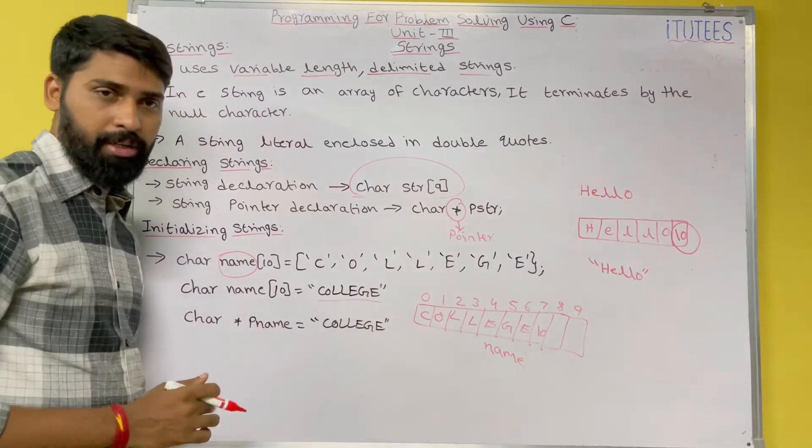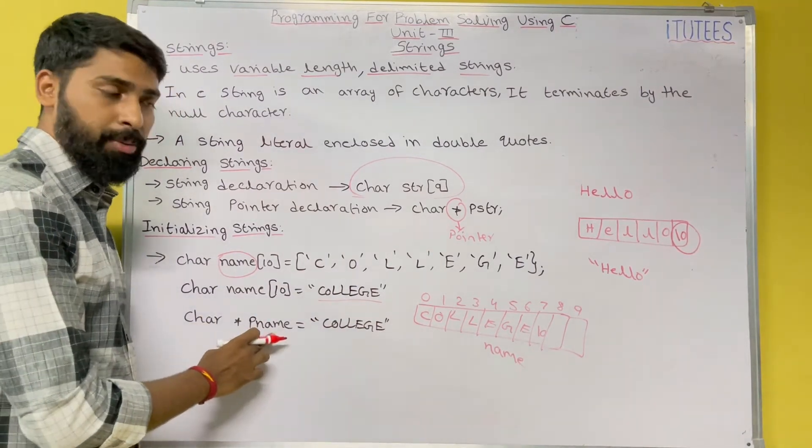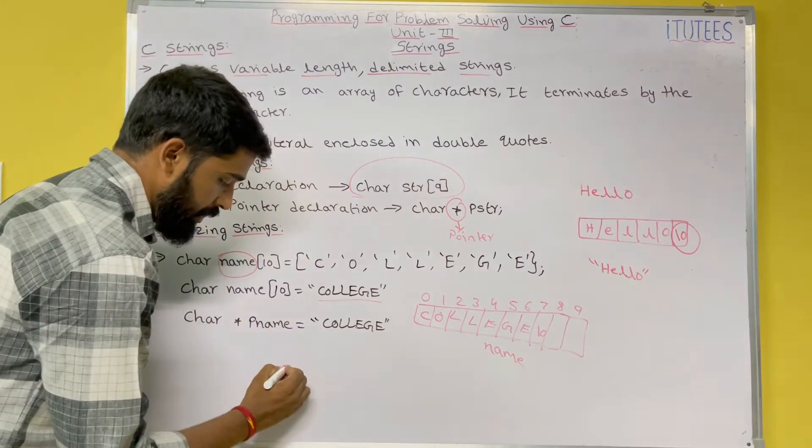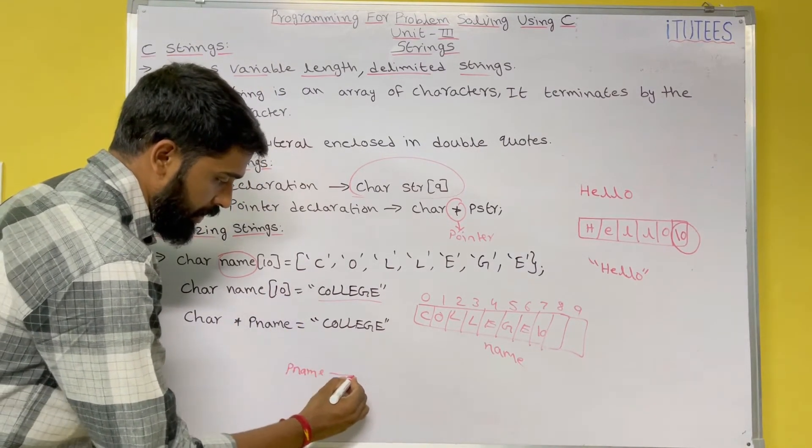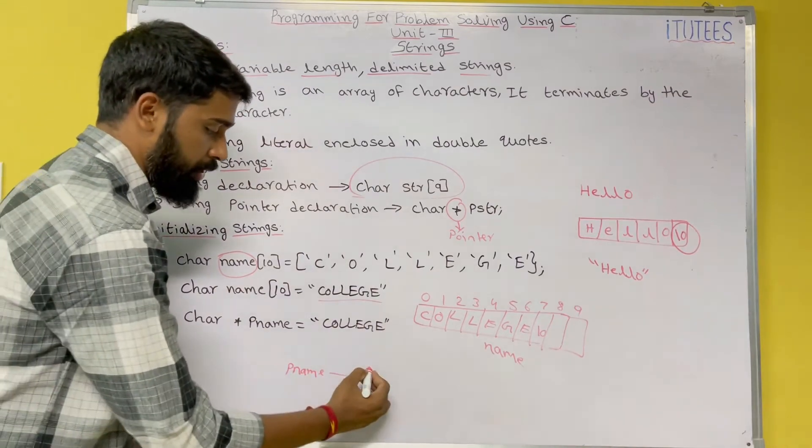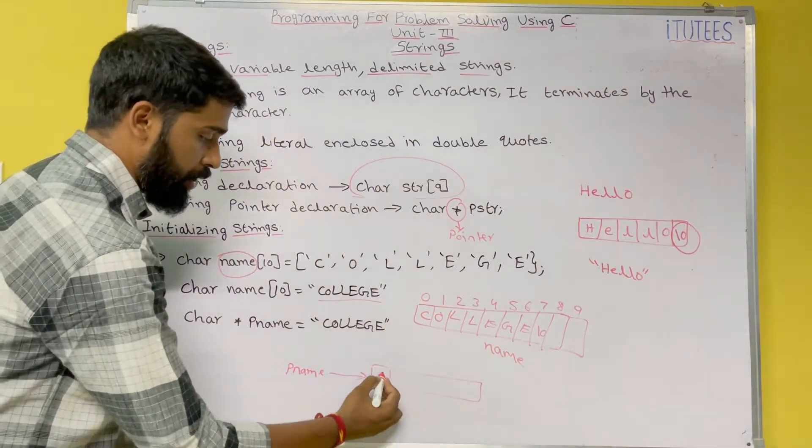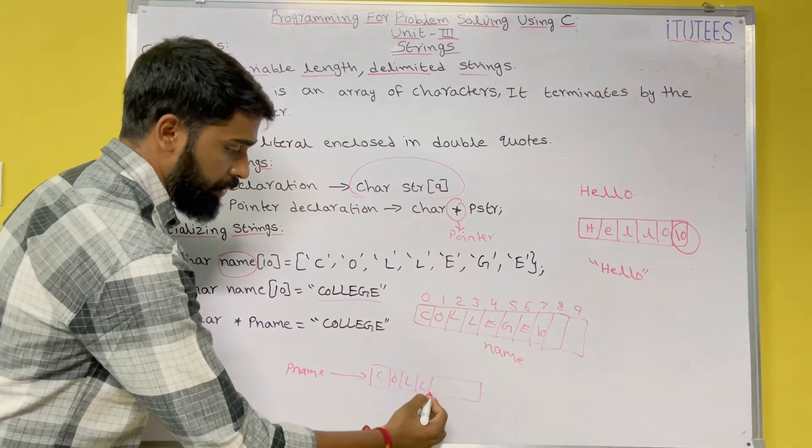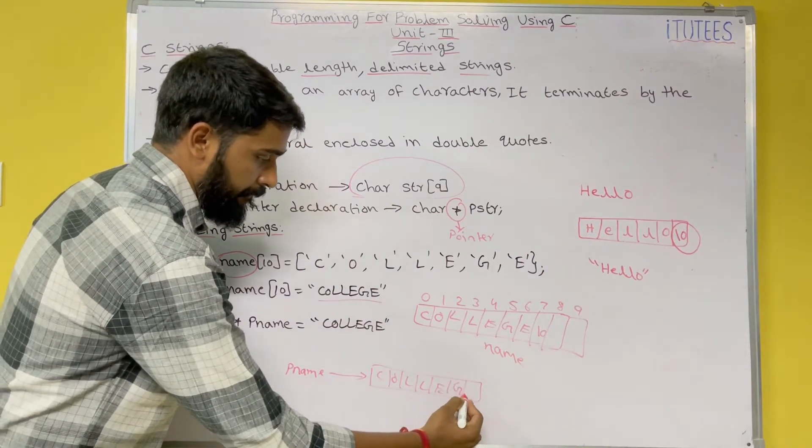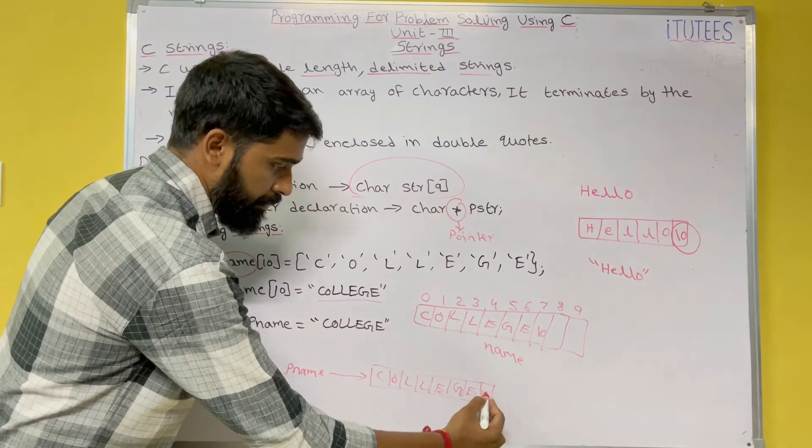And this is the pointer. So pointer pname, what it means? So this is the pointer, it indicates some memory location. So now, the college is stored in this memory.